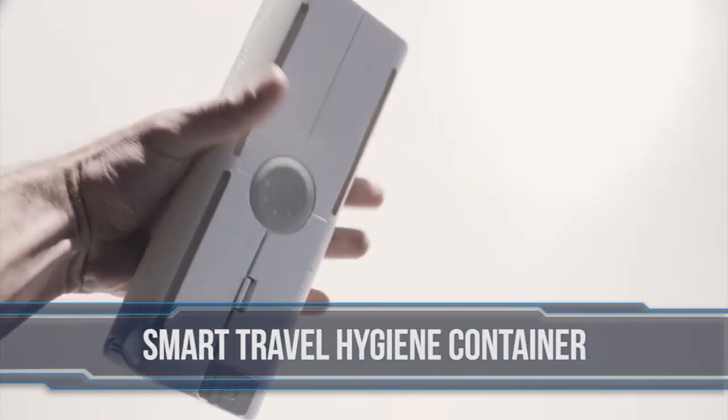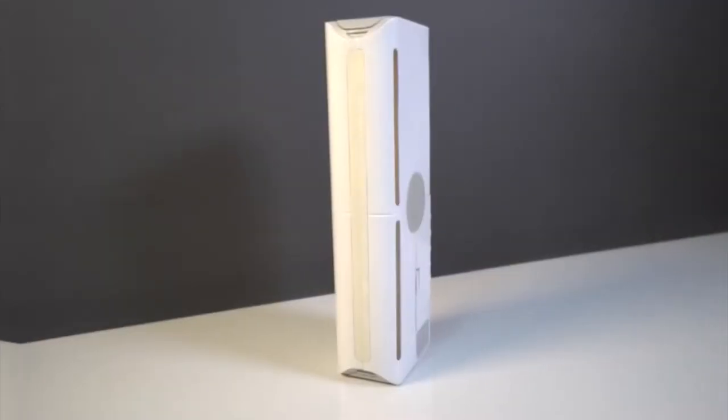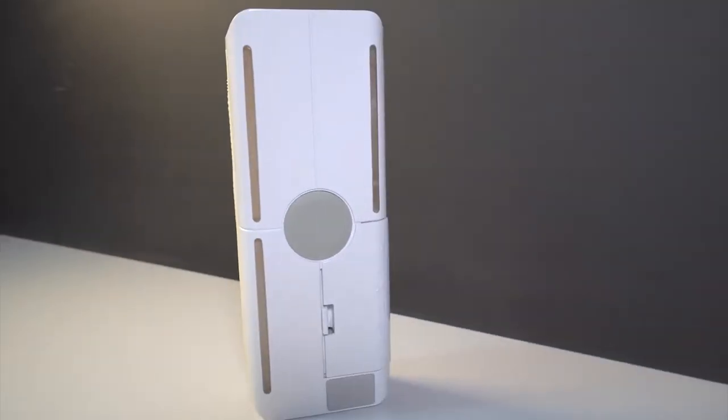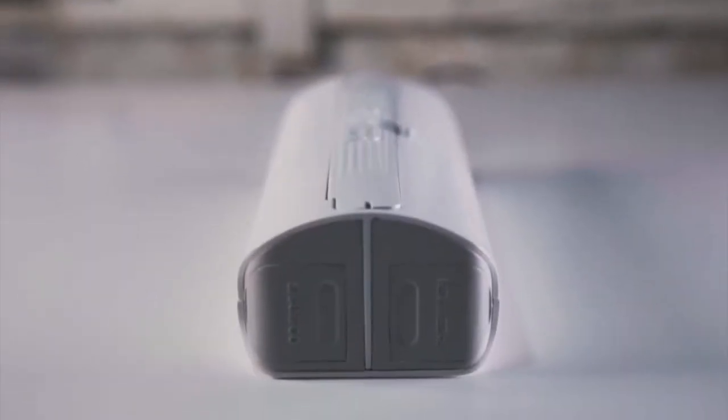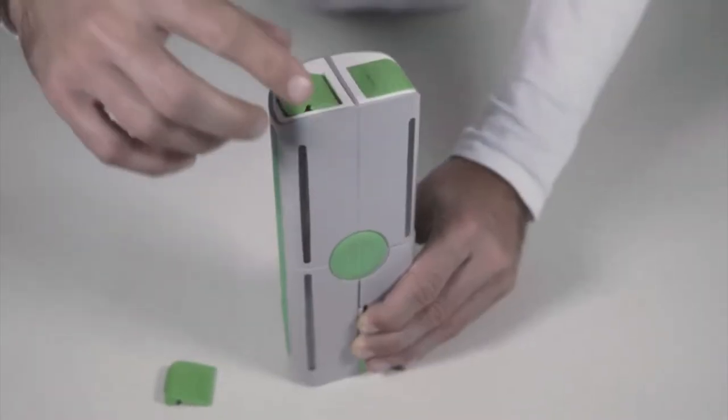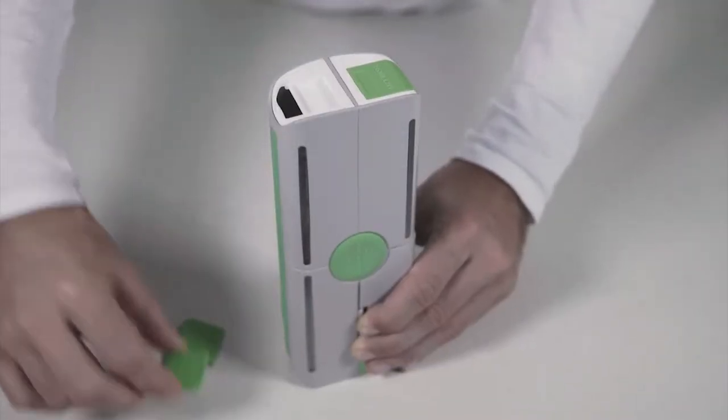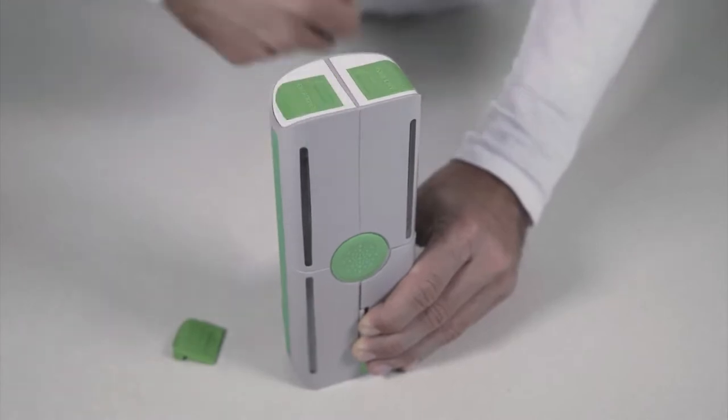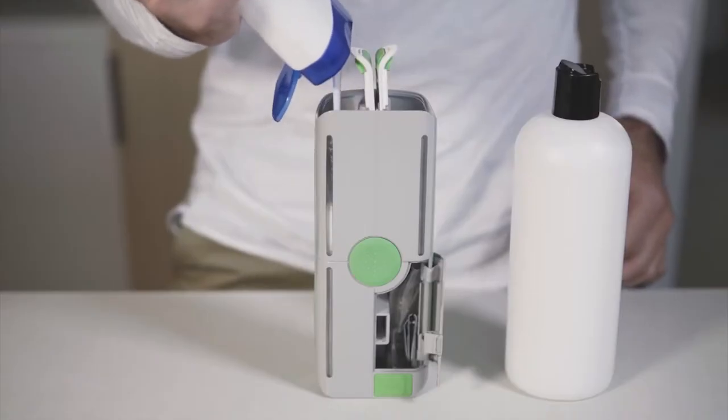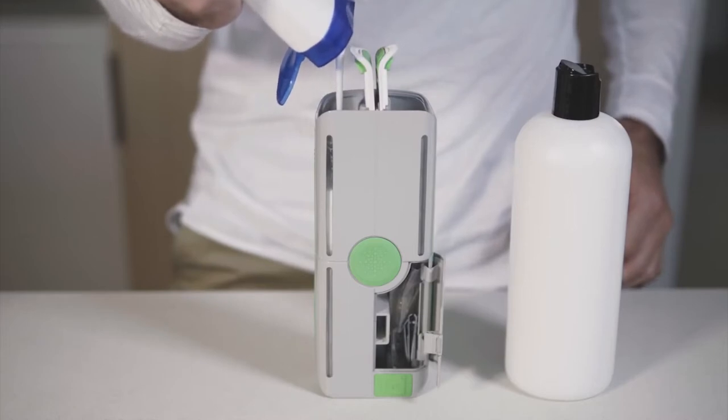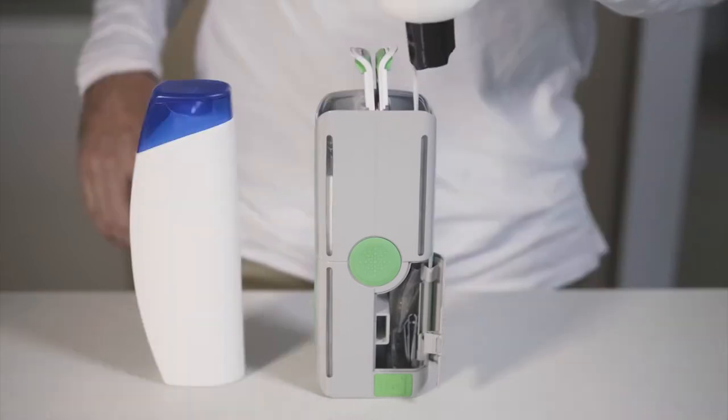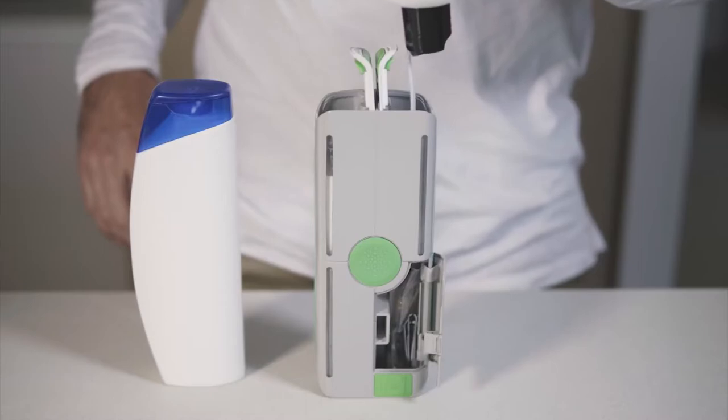Smart Travel Hygiene Container. The world's first multifunctional container to keep your bathroom essentials while on the go. You can never go wrong with this gadget. You can travel light and save more space in your bag with this smart container. The gadget features a waterproof compartment that intelligently keeps your hygienic items safe from germs. The ventilated toothbrush compartment makes your toothbrush dry off quickly after use.